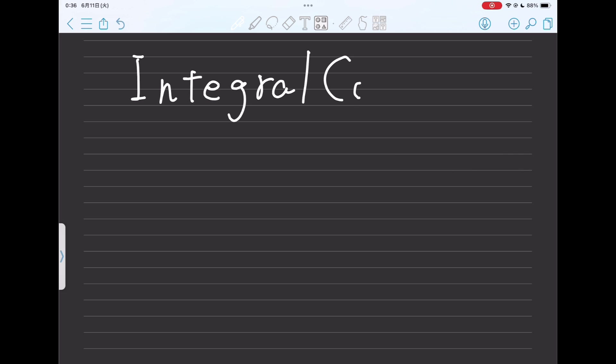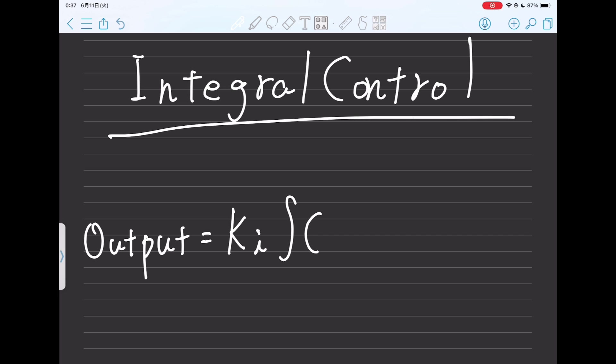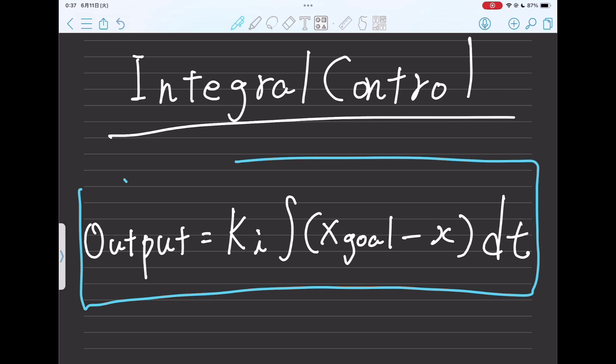Integral control is the control that solves this steady state deviation. As the name suggests, it accumulates minute differences between the coordinates of the ball and the target coordinates and tilts the platform according to the accumulated amount. The formula is shown below.